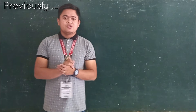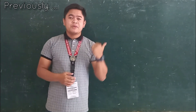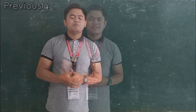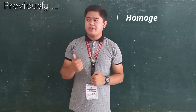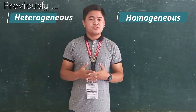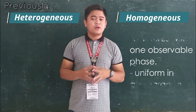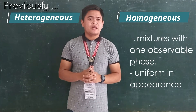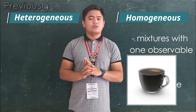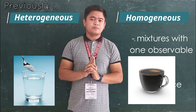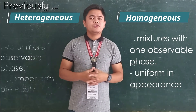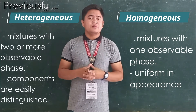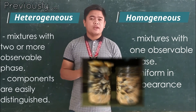You have learned that matter can be classified into mixtures and substances. So click this video to learn more about mixtures and substances. You have also learned that mixtures can be homogeneous or heterogeneous. Homogeneous are mixtures that have only one observable phase, like coffee or a salt solution, while heterogeneous has two or more, like a mixture of rocks and gravel.